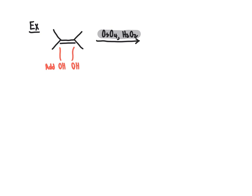We won't observe any skeletal rearrangements. It's going to involve just placing a hydroxy group on each of those two carbon atoms whenever we use osmium tetroxide and peroxide. So we started off with a four-carbon chain with methyl groups at carbon-2 and carbon-3, and now at carbon-2 and carbon-3 we also have hydroxy branches — giving us that vicinal diol product. Let's look at a bit more detail regarding the mechanism and how osmium tetroxide, also known as osmic acid, comes into play.